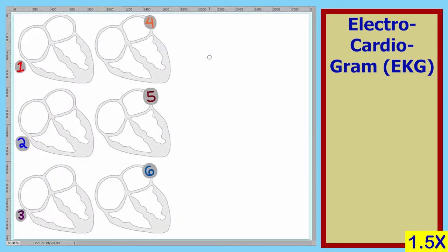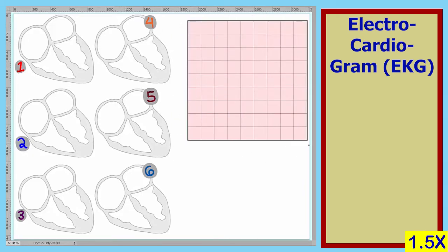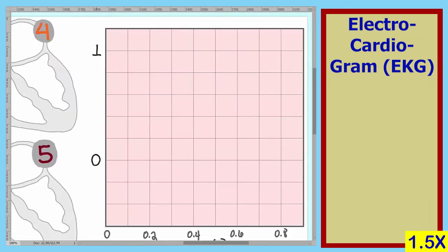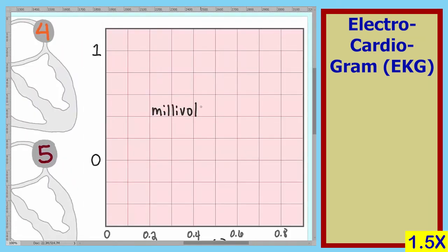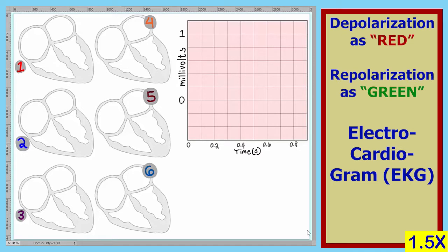We will also need a blank graph on which to place the EKG tracing. We will first show the electrical events that take place in the heart, then we will represent these electrical events on the electrocardiogram. We will represent depolarization as a red color and repolarization as a green color.